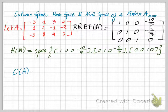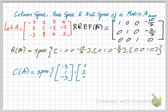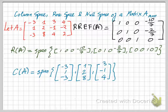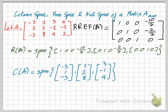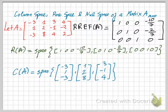So we can take the three vectors — the first, the second, and the third vectors of A — to form a basis for the column space of A, because we know that these three vectors are linearly independent.